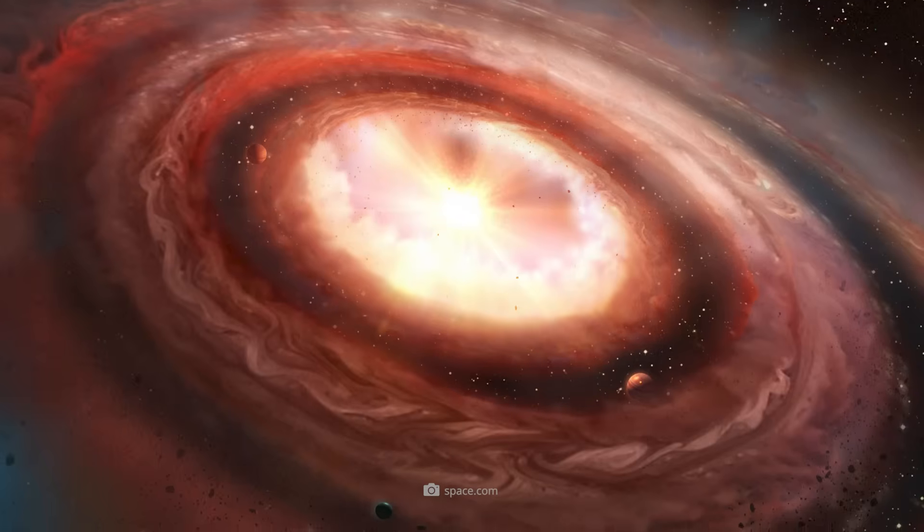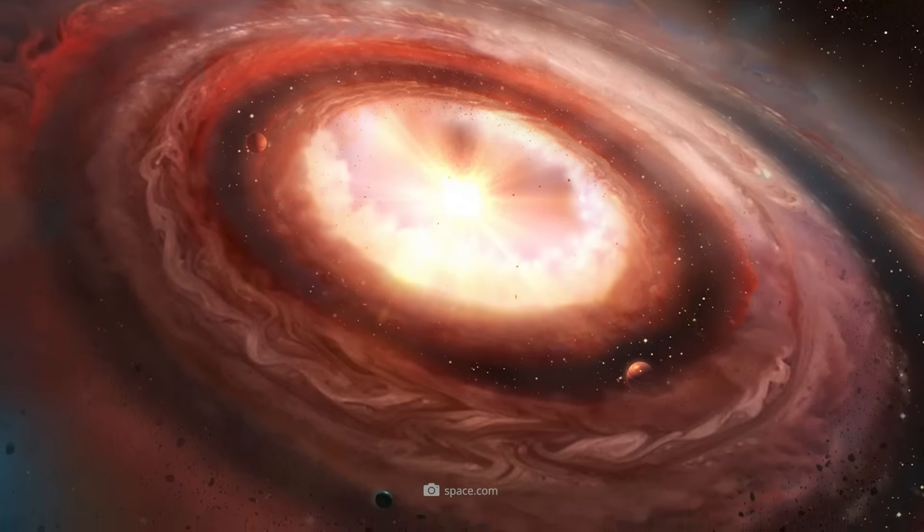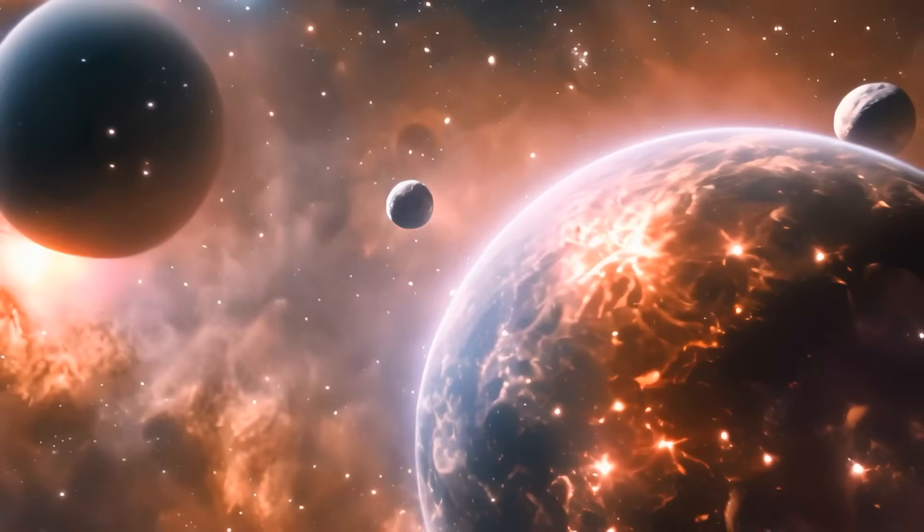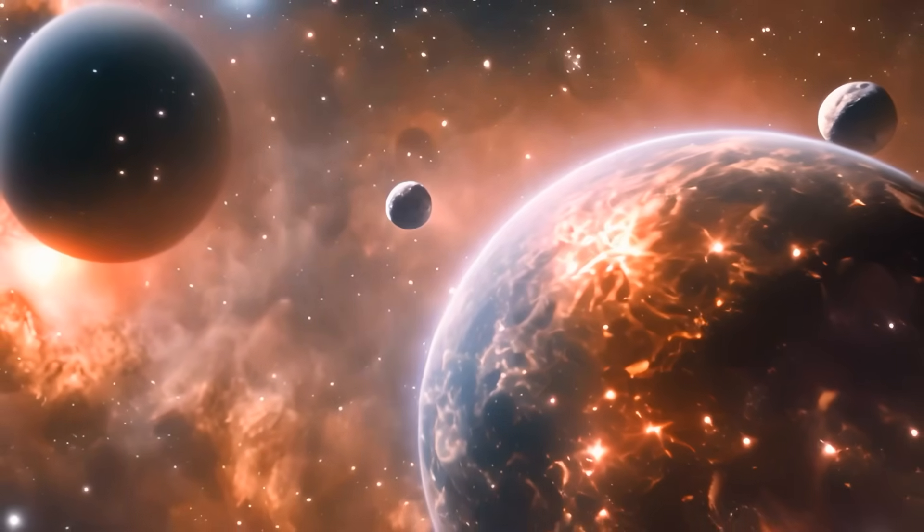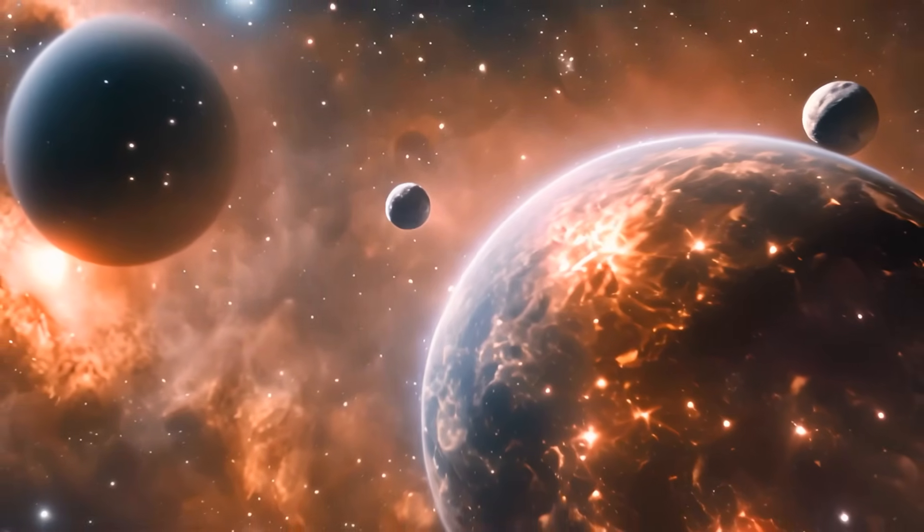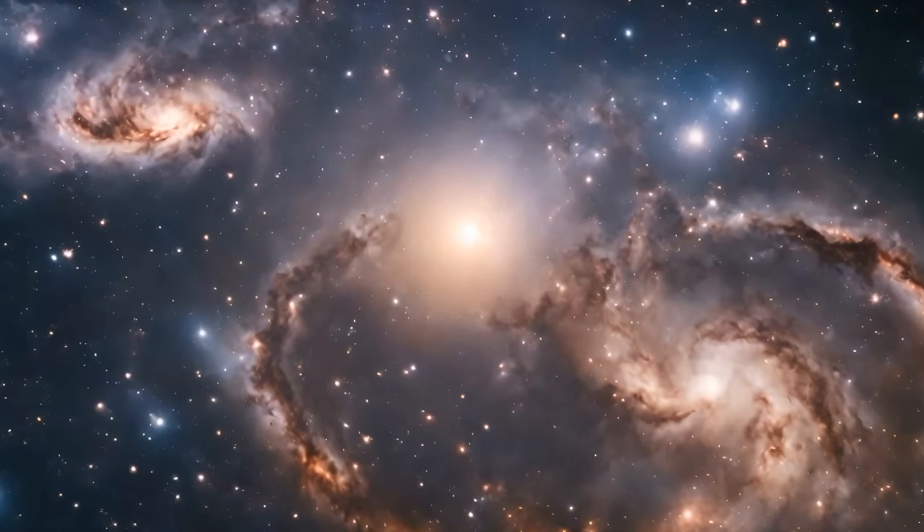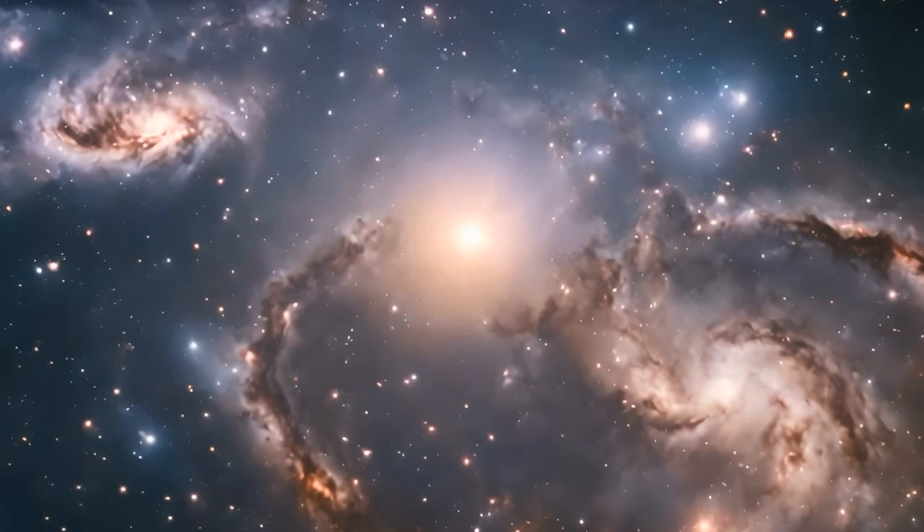Planets can later form in the protoplanetary disk, while the star continues to grow. The planets are left with practically only what the hungry baby star leaves over, and it's not impossible for the star itself to swallow a young planet.